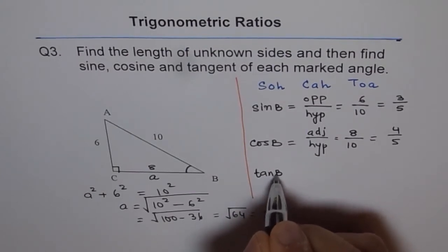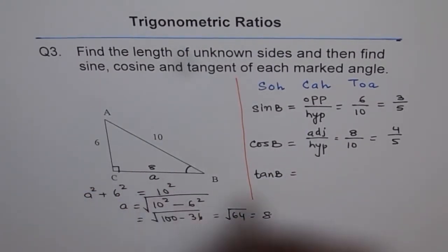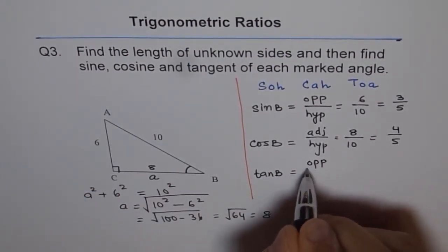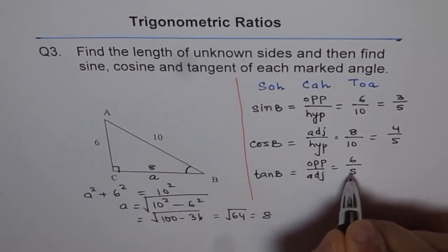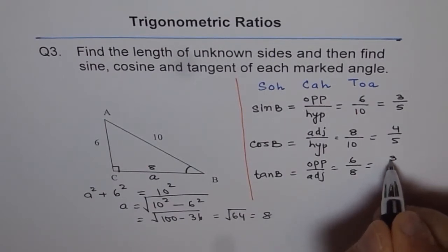Tangent B equals opposite over adjacent. The opposite is 6, adjacent is 8. So this is 3 over 4.